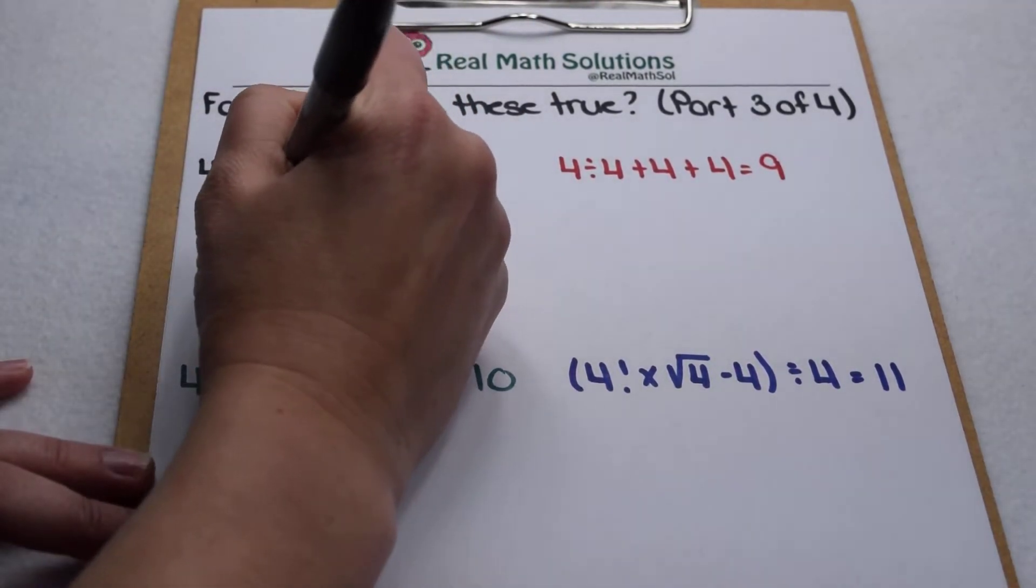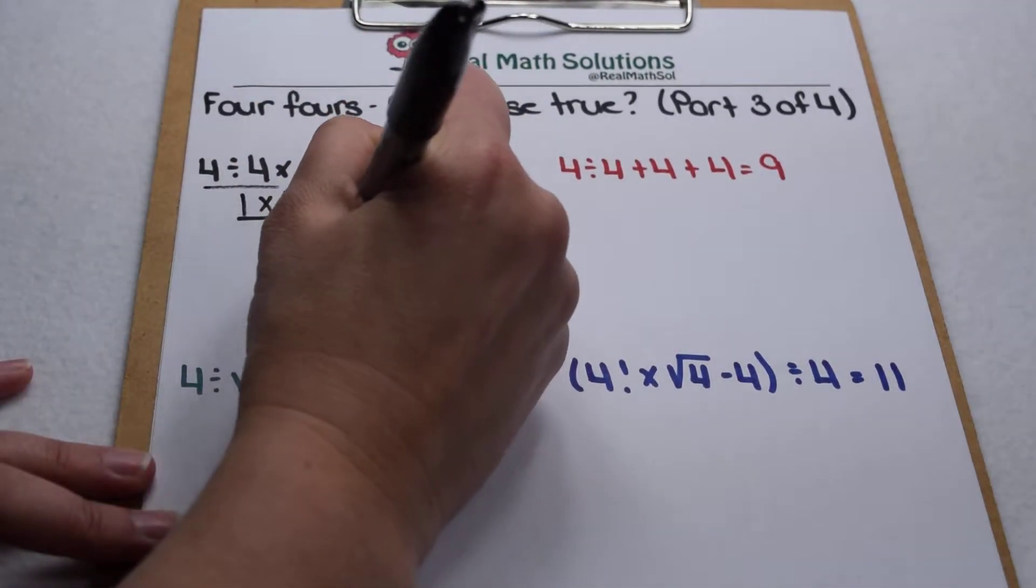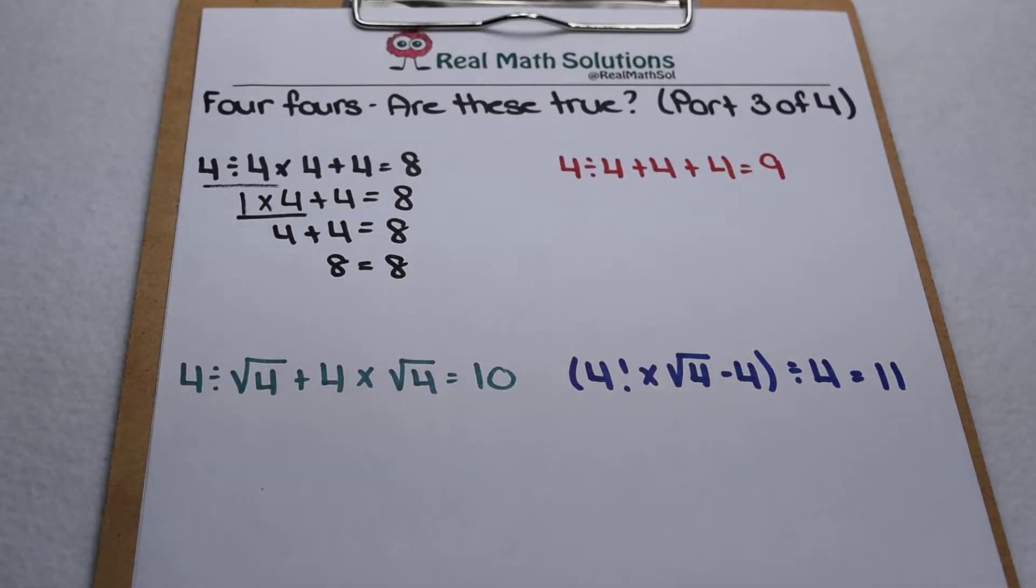Multiplication, 1 times 4 is 4, so that leaves me with 4 plus 4. 4 plus 4 does equal 8, so that one checks out as 8 equals 8.